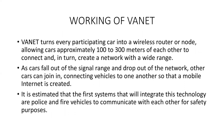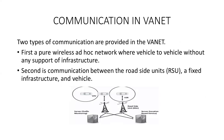VANET turns every participating car into a wireless router or node, allowing cars approximately 100 to 300 meters of each other to connect and create a network with a wide range. As cars fall out of the signal range and drop out of the network, other cars can join, connecting vehicles to one another so that a mobile internet is created. It is estimated that the first systems to integrate this technology are police and fire vehicles, communicating with each other for safety purposes.